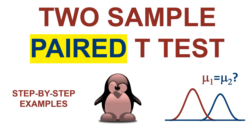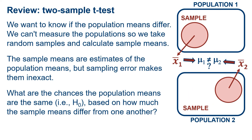The two-sample paired t-test is used to compare the means of two populations when each value in each population has a direct and specific relationship to each value in the other. We want to know if the population means differ, but we can't measure the populations, so we take random samples and calculate the sample means. Sampling error makes them inexact, so we ask: what are the chances that the population means are the same based on how much the sample means differ from one another?